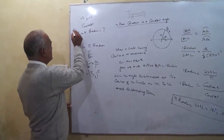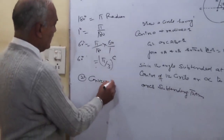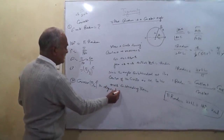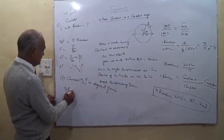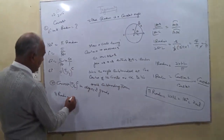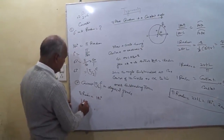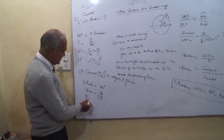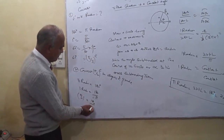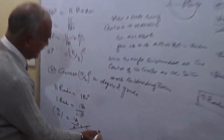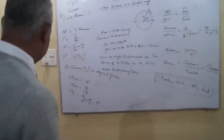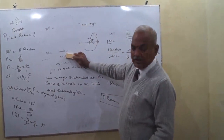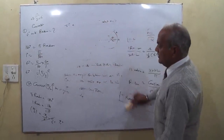Second question: convert pi by 2 circular measure into degree and grade. Pi radian is equal to 180 degrees, so one radian equals 180 degrees by pi. Therefore, pi by 2 radian equals 180 by pi, multiplied by pi by 2. The pi cancels, giving 90 degrees.